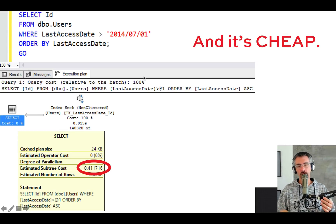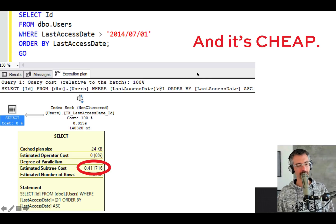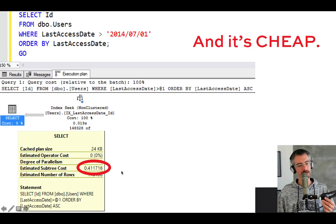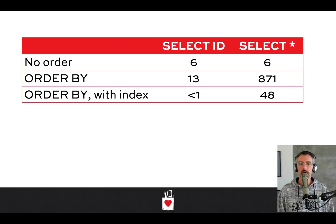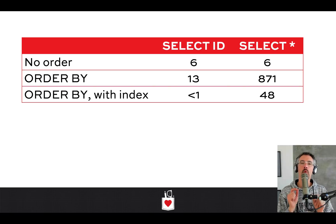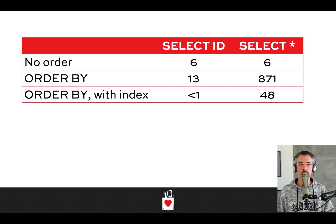There's no parallelism because SQL Server considers this easy — it's going to cost less than one query buck. When you compare these, even when you do SELECT star, the cost drops pretty dramatically. Why is it so much cheaper? Why is it faster for SQL Server to do this work with an index? There are two parts to the answer.